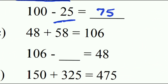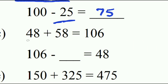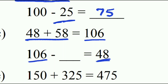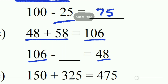Next: the addends given are 48 and 58. When we add 48 and 58, the sum is 106. When we subtract one addend from the total sum, 106 minus 48 gives us the remaining addend, which is 58.